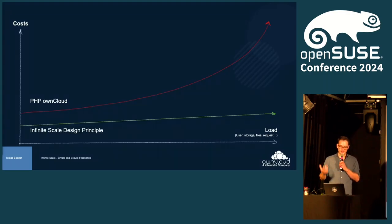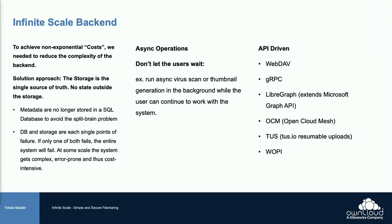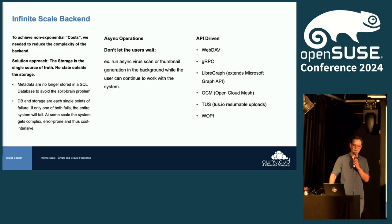The idea behind Infinite Scale is to flatten the curve and have linear cost growth. The first thing we did is to not have a SQL database. We used to store all the metadata — like who a file was shared with — in a database. Now we put the metadata directly on the storage. So you basically scale with the storage: if it grows, you just plug in new drives. This also means there is no state outside of the storage — it's cloud-ready technology.